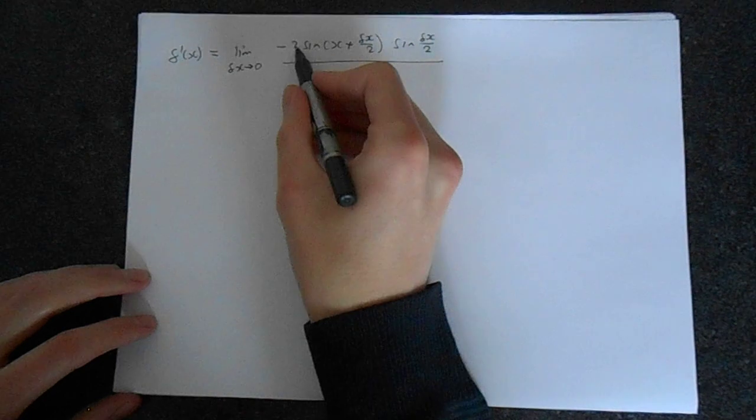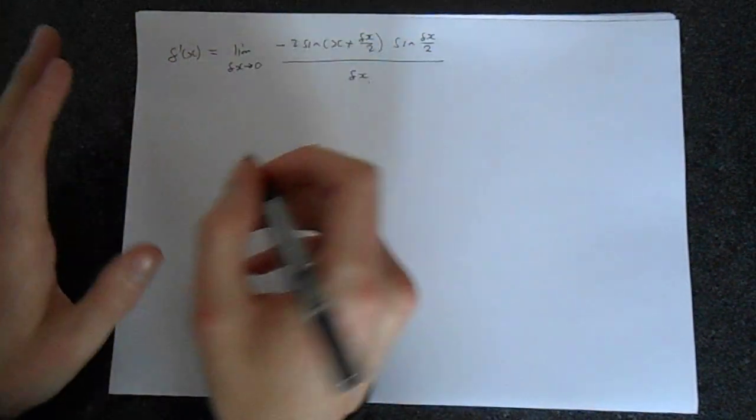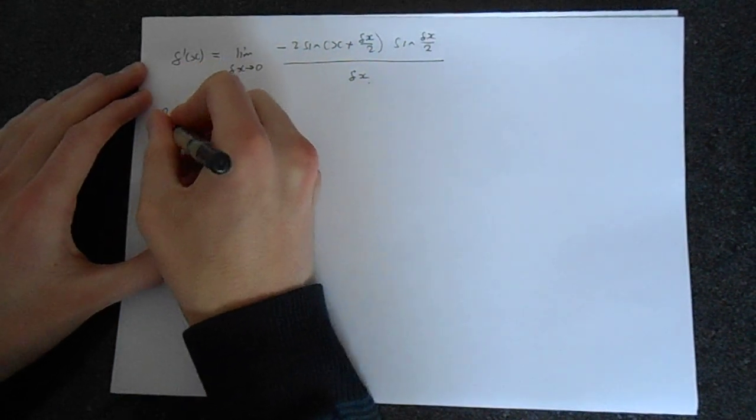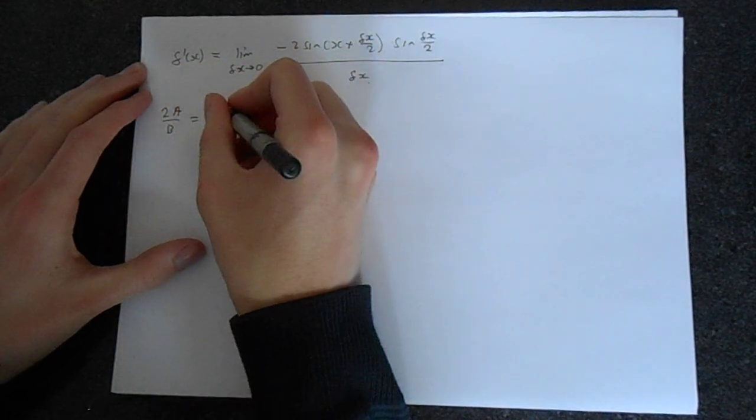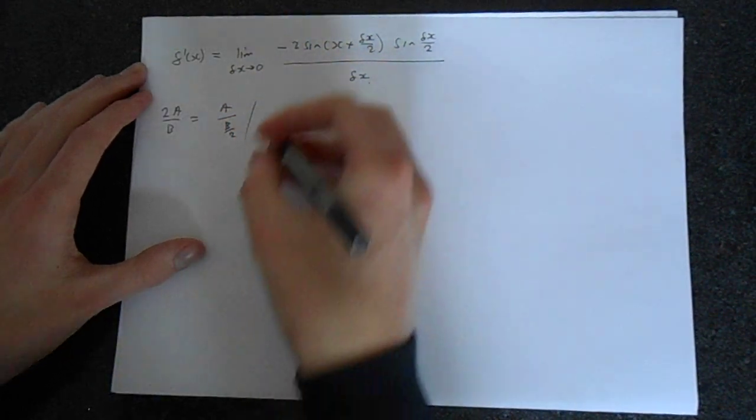Now we can do a trick here. We can actually move this 2 down to the bottom and I'll show you the kind of idea behind this. Imagine we had 2a over b - this is equal to a over b over 2, and I'll just explain why.